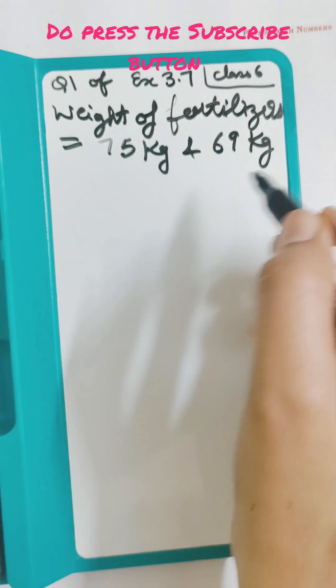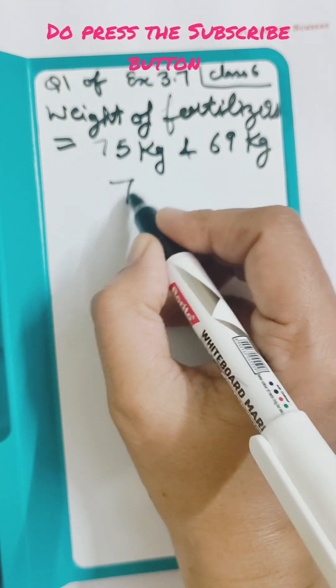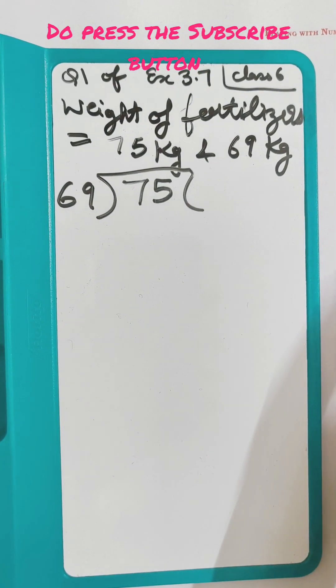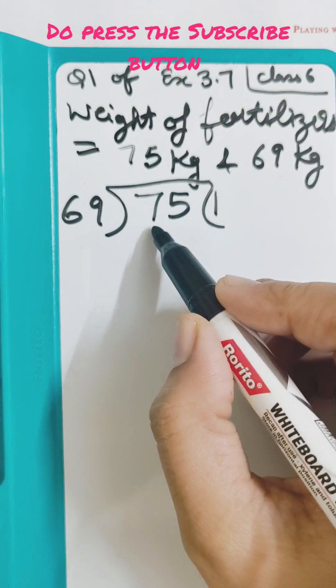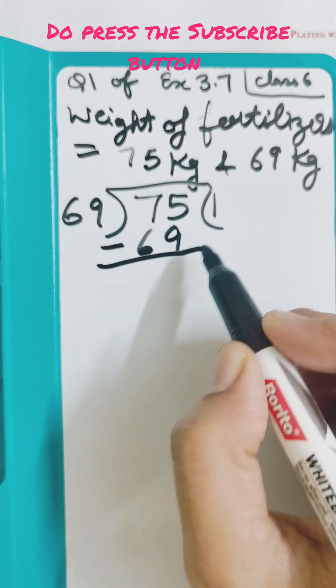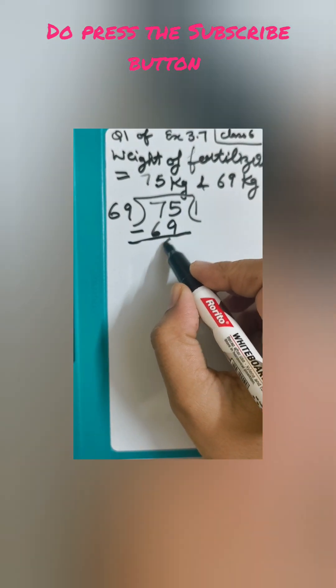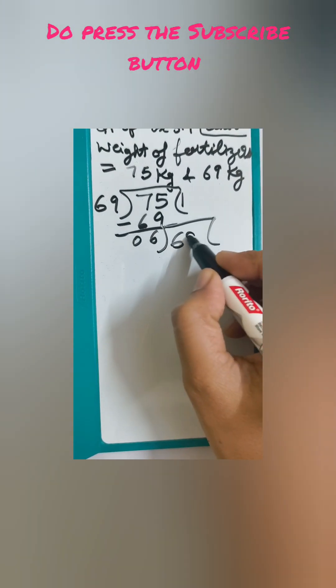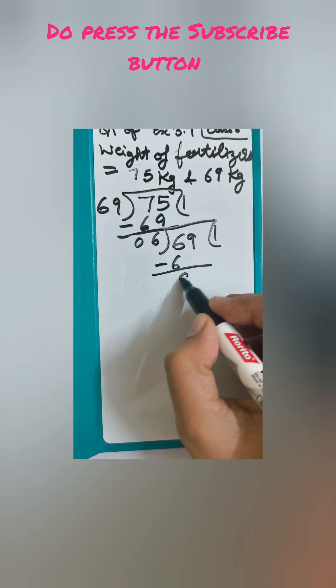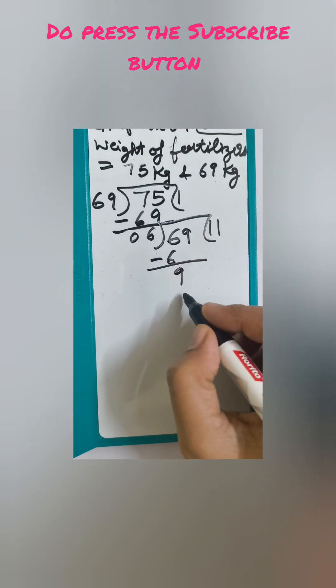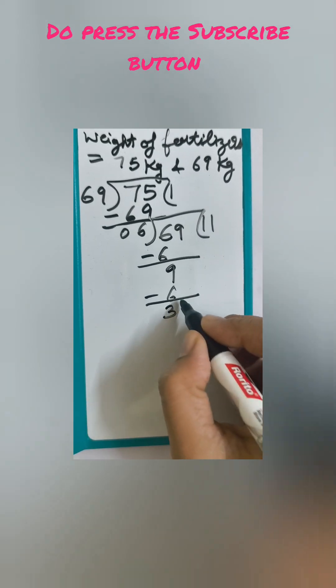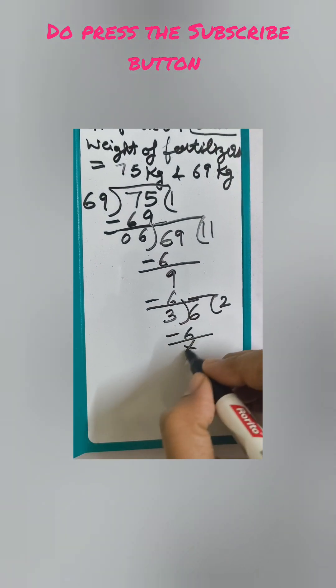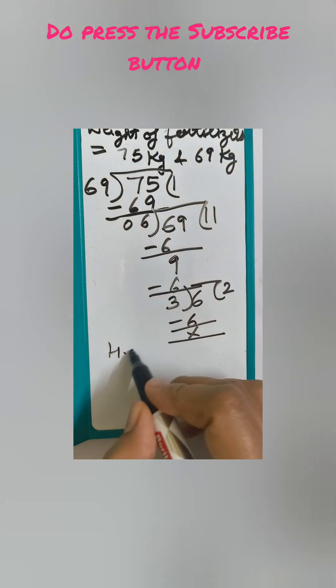69 into 75 goes 1 time. 69 minus gives us 6. Now 6 into 69 leaves remainder 3. Then 3 into 6 goes 2 times, giving 6. So the HCF we got is 3.